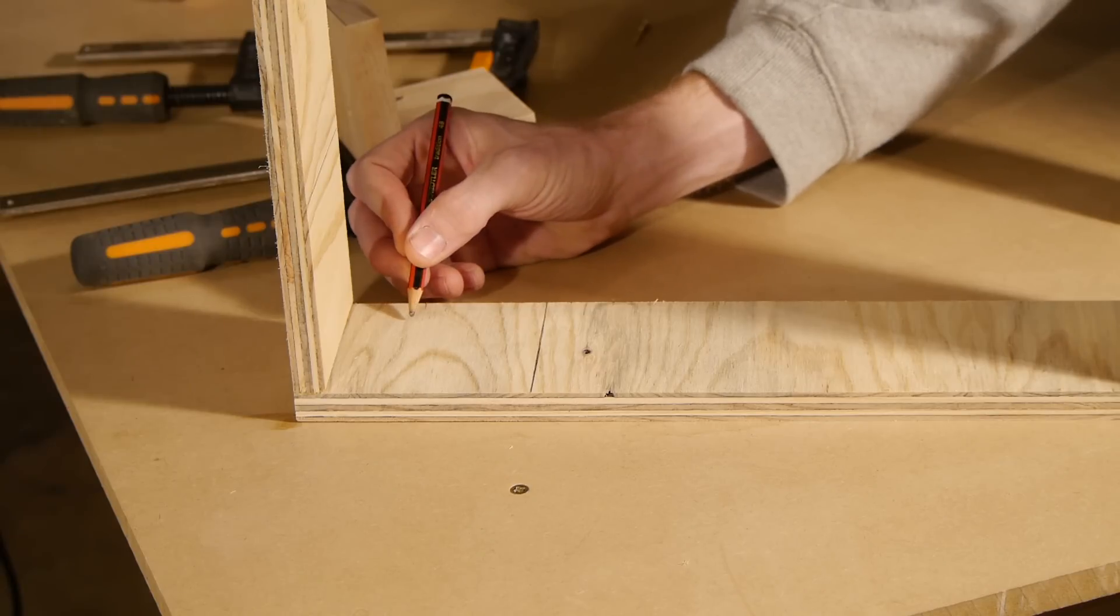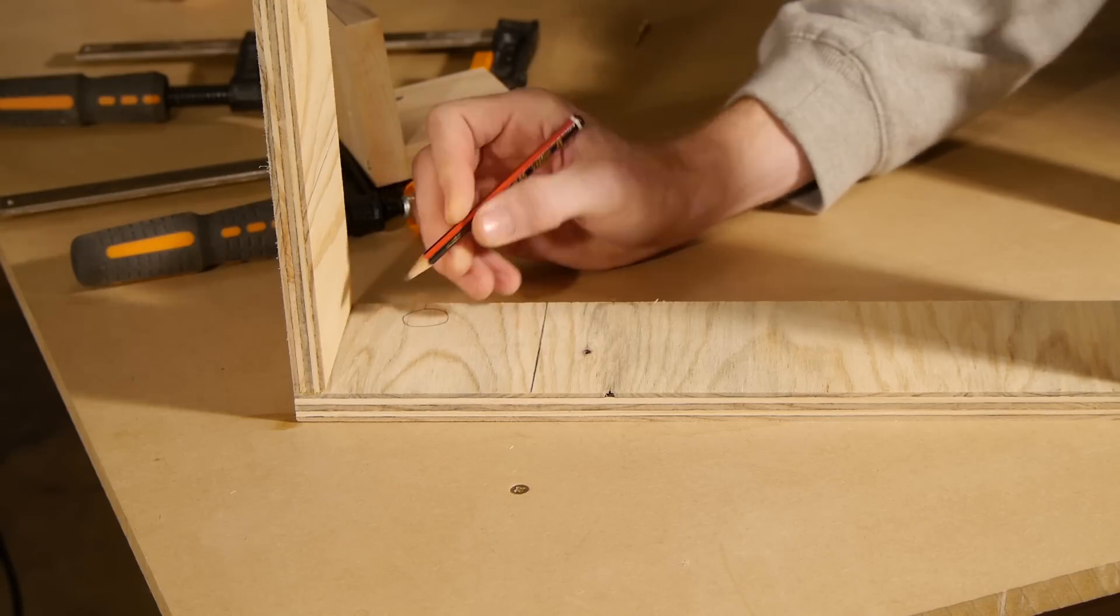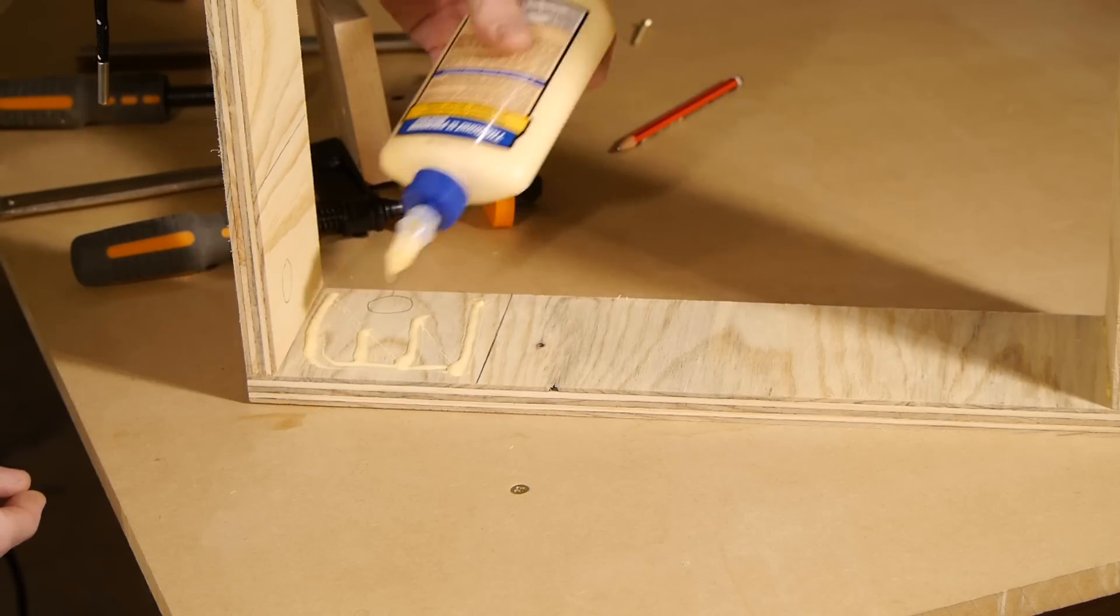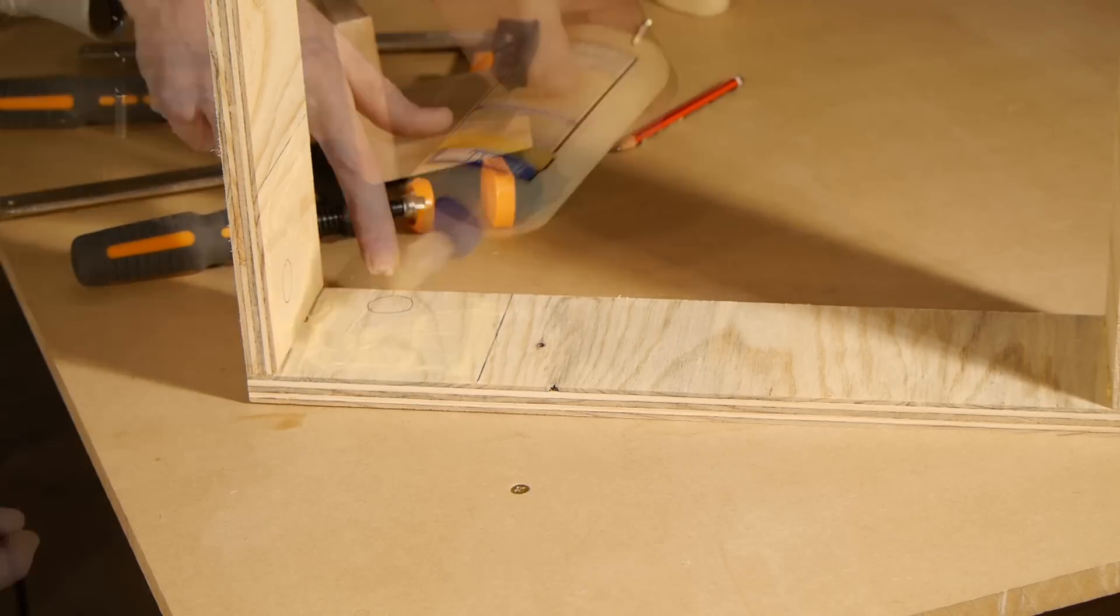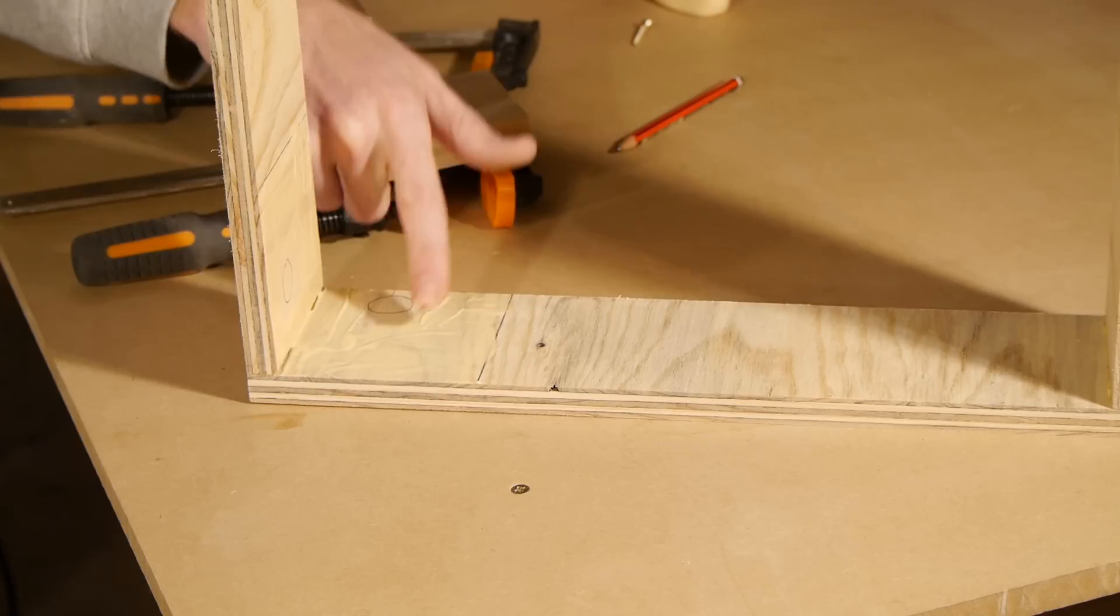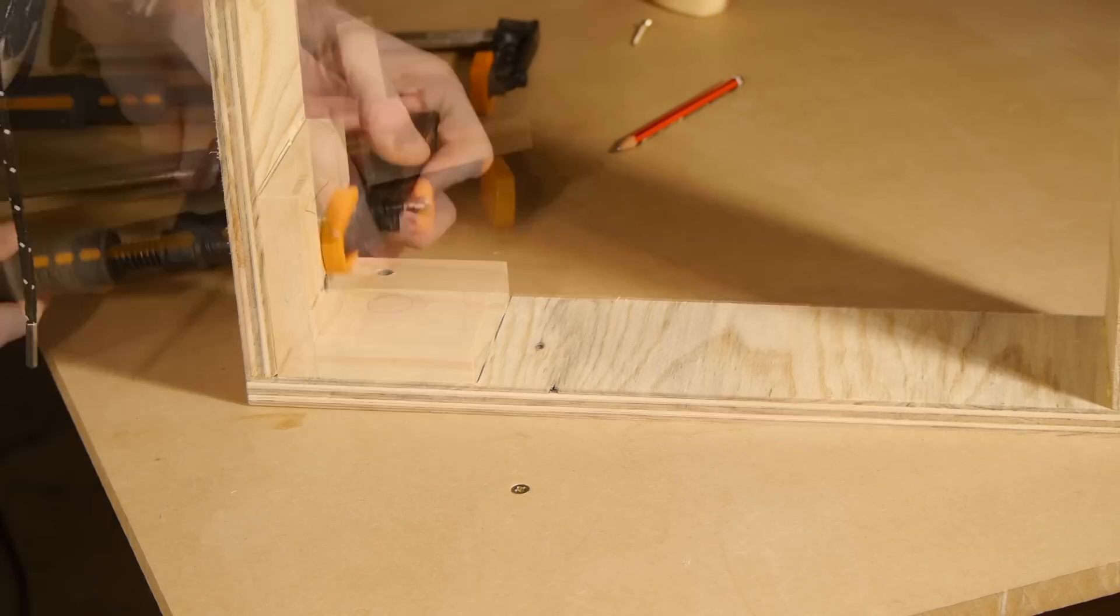Just make sure to install them the right way around so they are all in the same way, and try not to add glue where the thread insert is. Otherwise the glue may squeeze out into the thread when you clamp it down and prevent the bolt from going all the way in when attaching the leg.